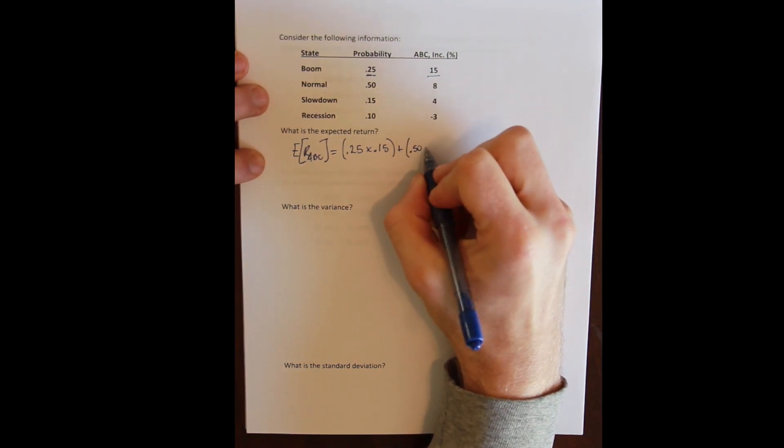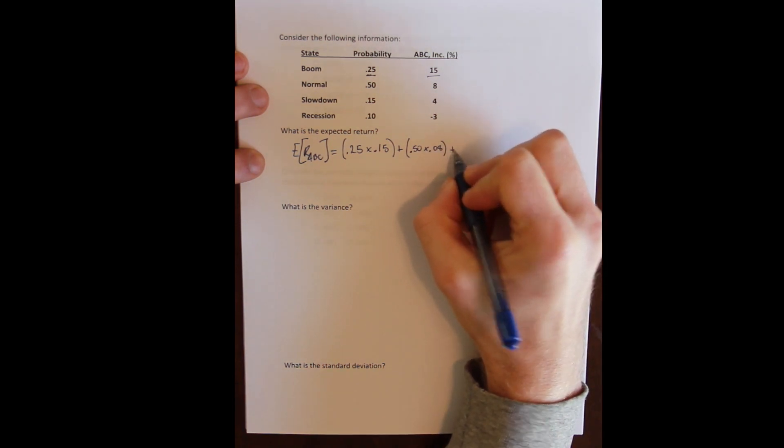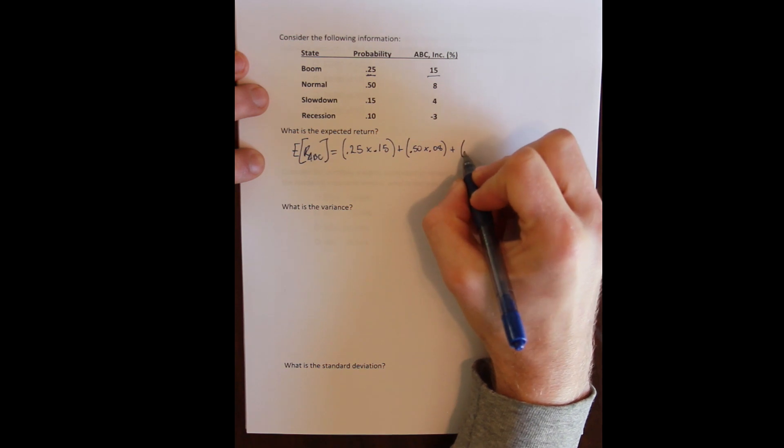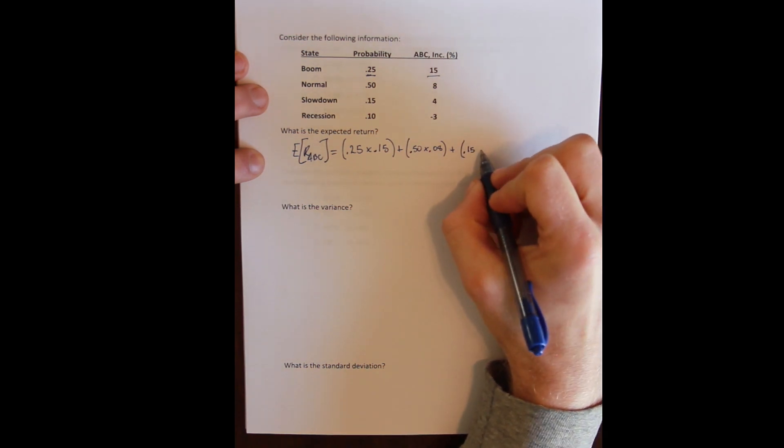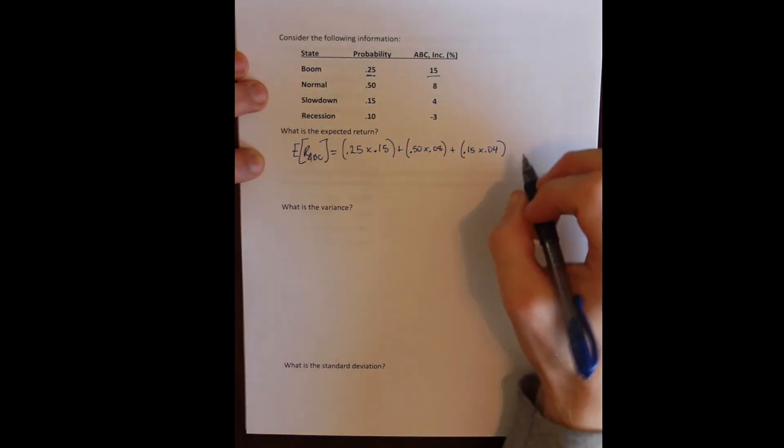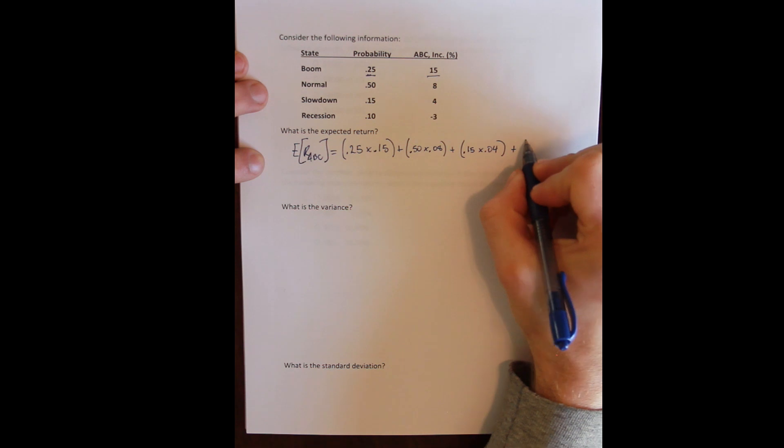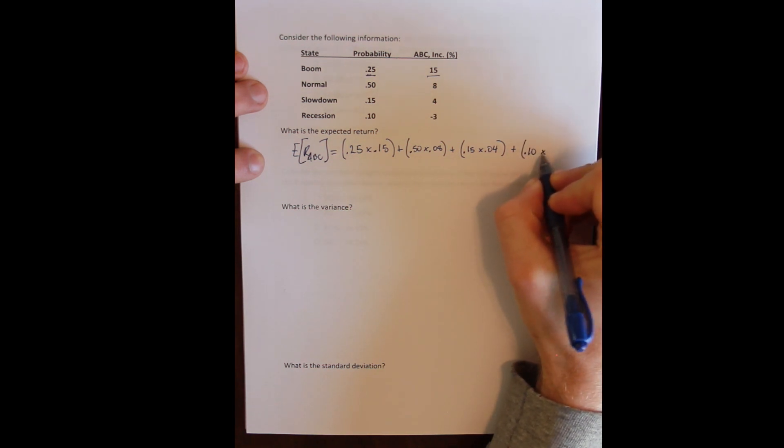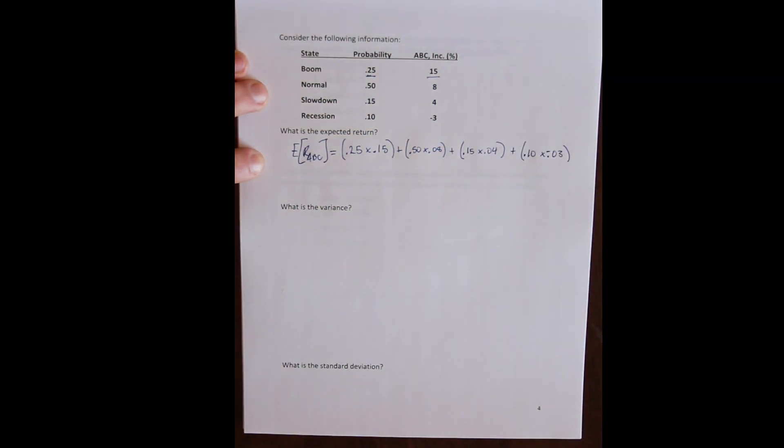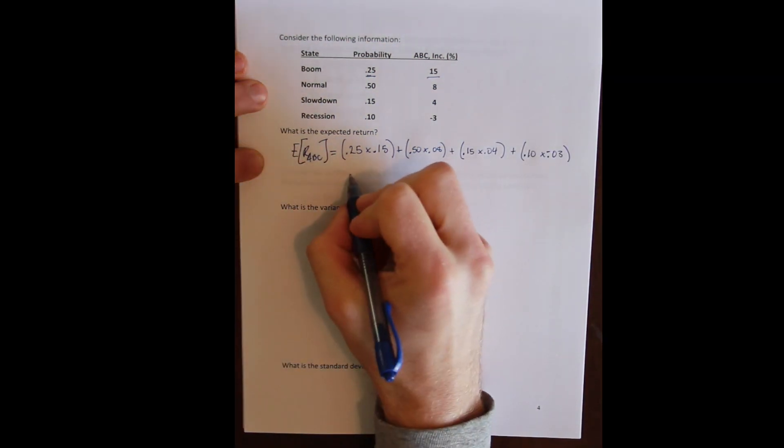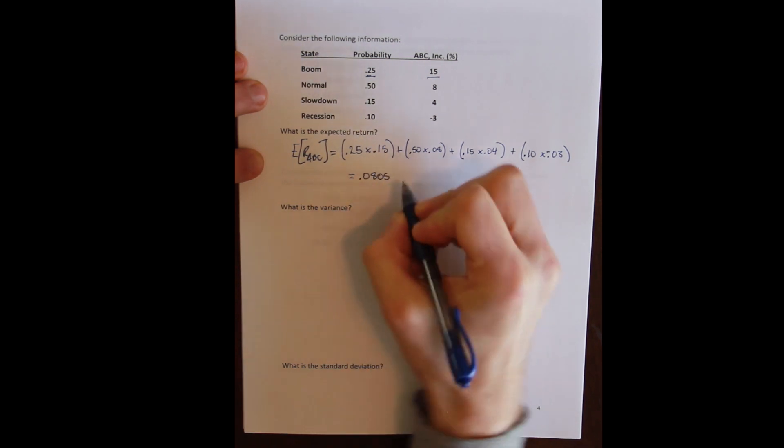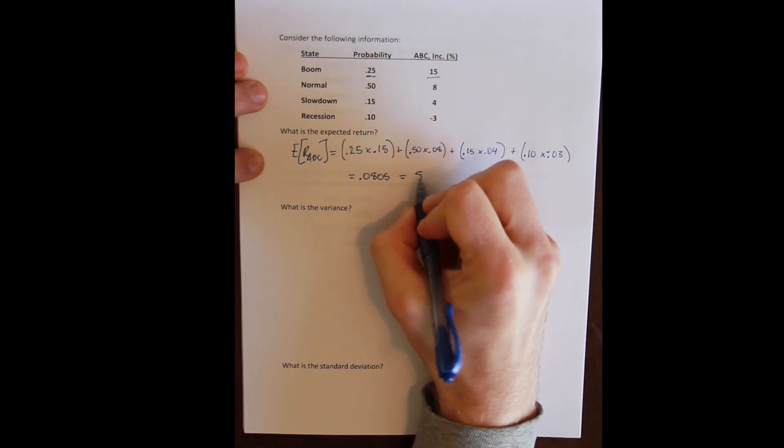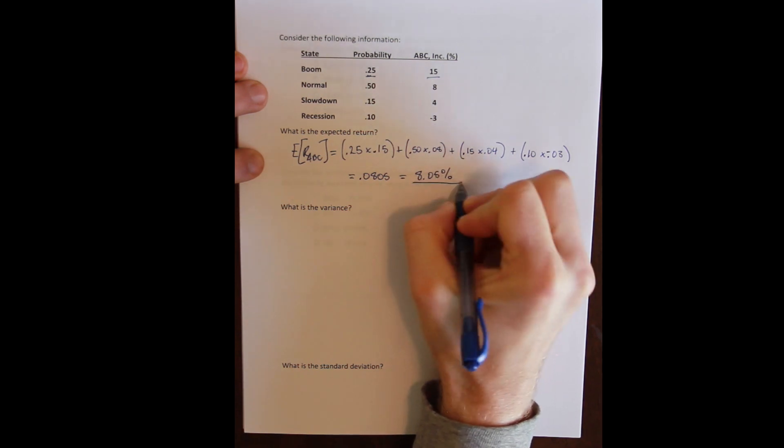Plus the slowdown state which has a 15 percent probability of occurring and ABC will have a 4 percent return if it does occur. Finally, the recession state which has a 10 percent probability and ABC has a negative 3 percent return in the recession. Do our algebra correctly here and get 0.0805 for an expected return of 8.05 percent.